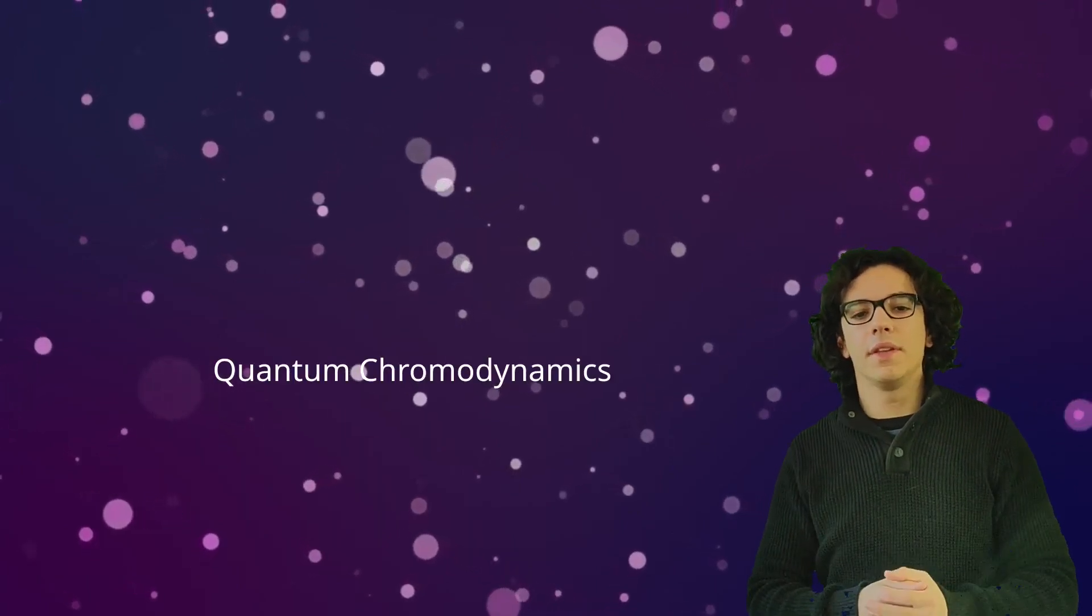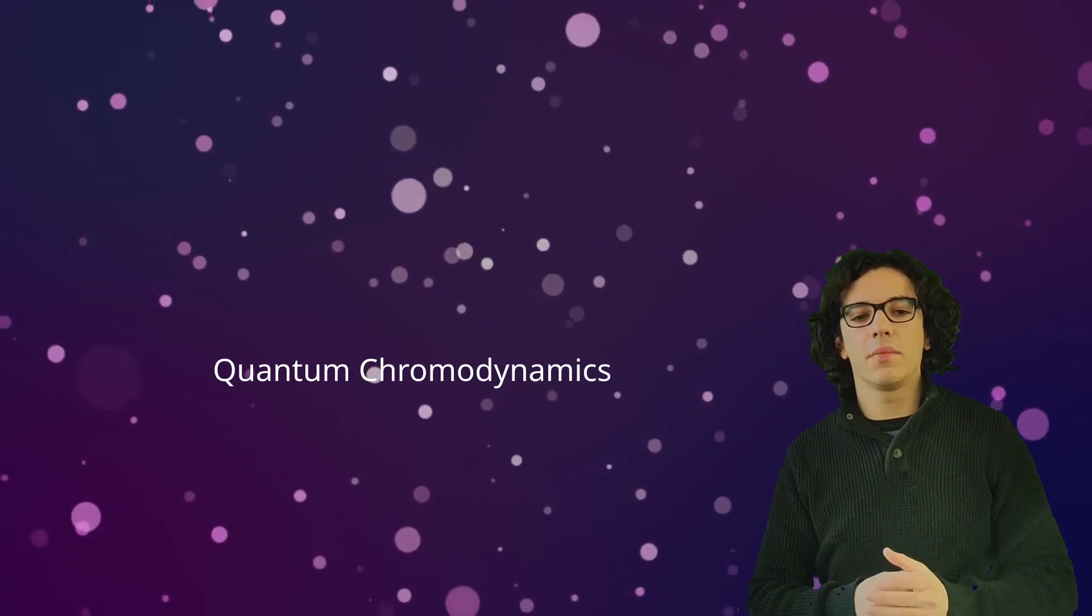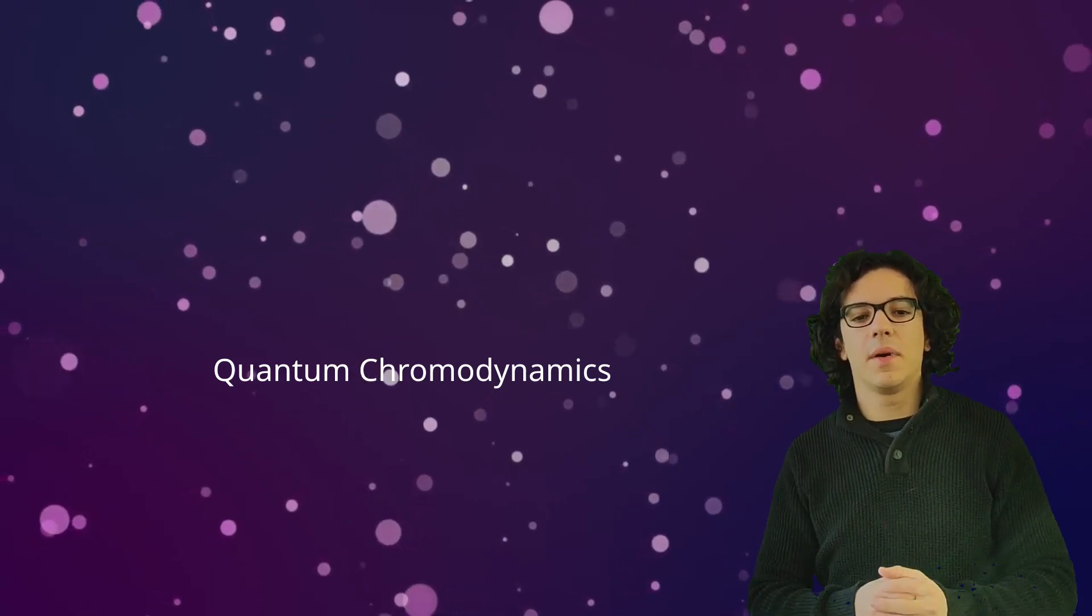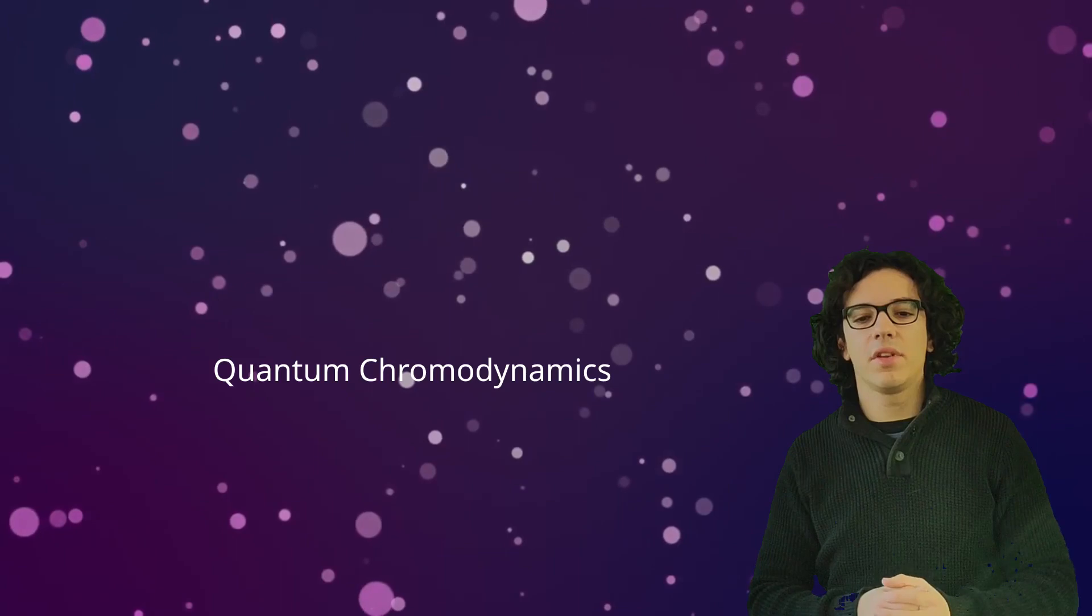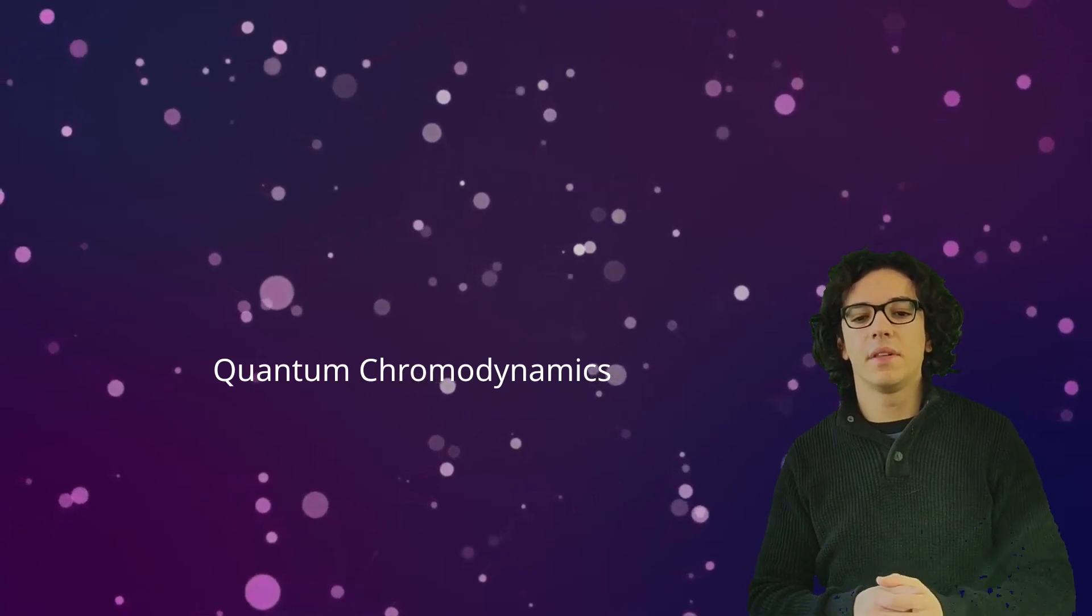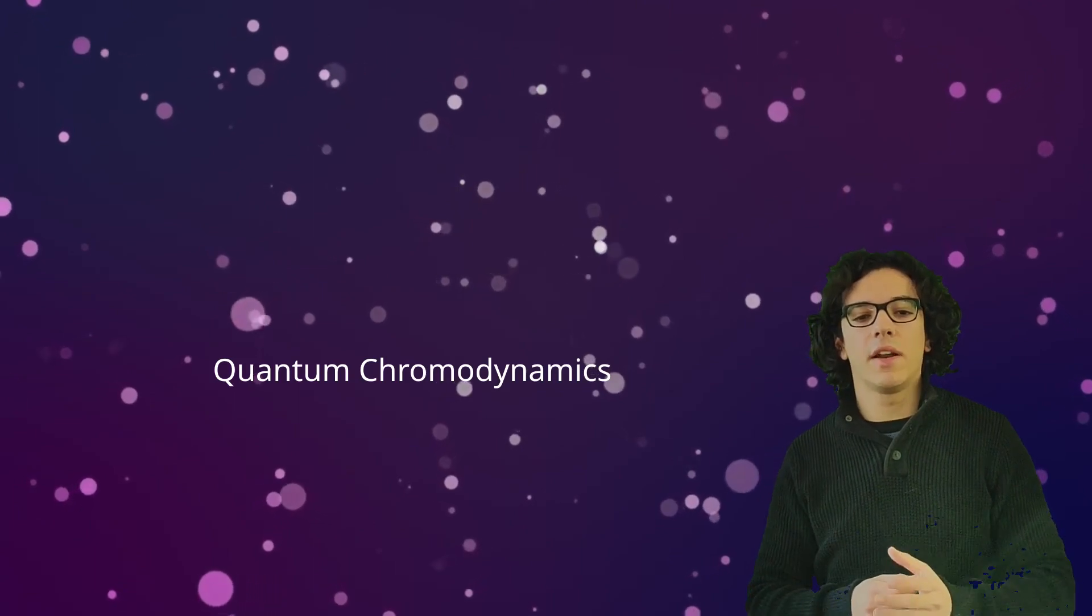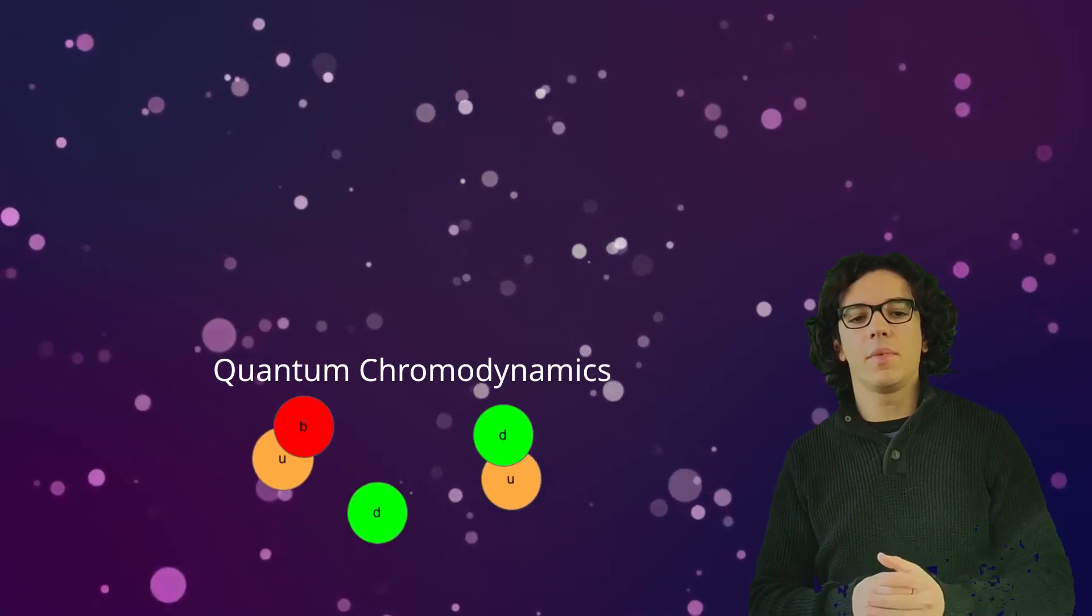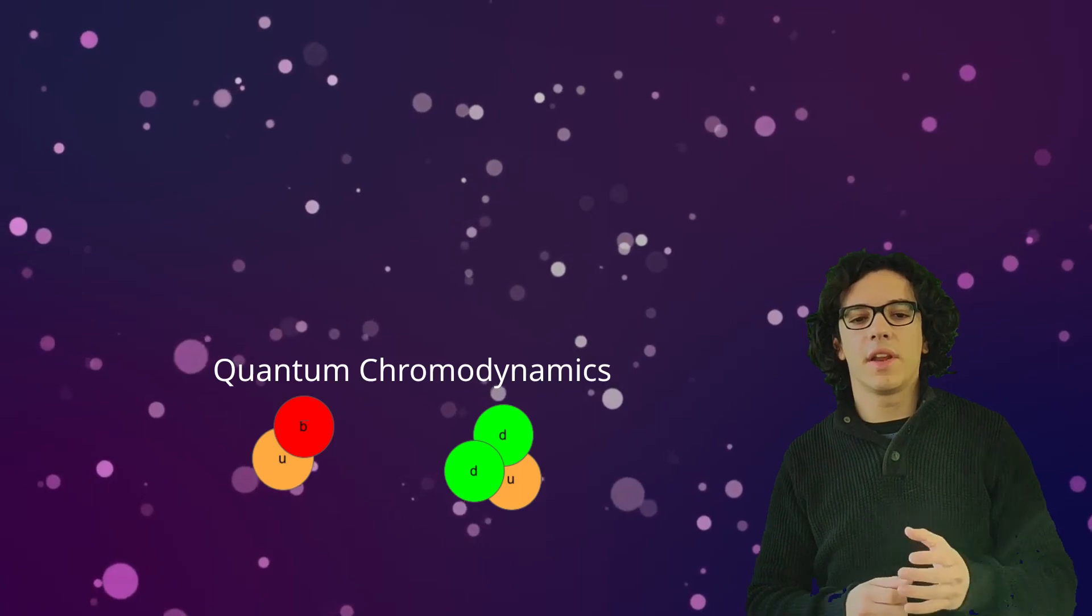The quantum field theory that describes this interaction is called quantum chromodynamics, and is mediated by gluons. It is the SU3 component of the standard model, and one of its key features is called color confinement hypothesis, which states that quarks are not allowed to propagate freely, and can only propagate in colorless states where they are bound.